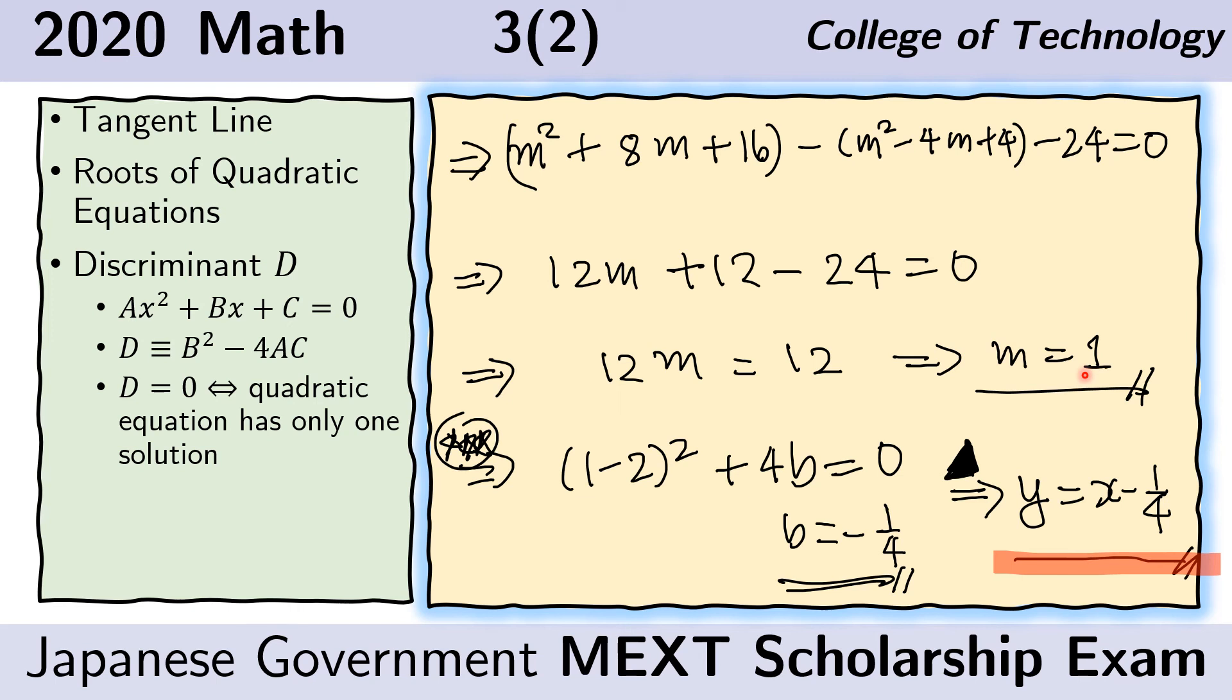We choose one of the previous equations that contain b and m and we substitute this value of m for m. And we will notice that b would have to equal this value here. And therefore, the tangent line must be of the form y equals x minus 1 fourth. Here, the slope is 1 because m is 1, and minus 1 fourth is the constant term because the y-intercept is minus 1 fourth.